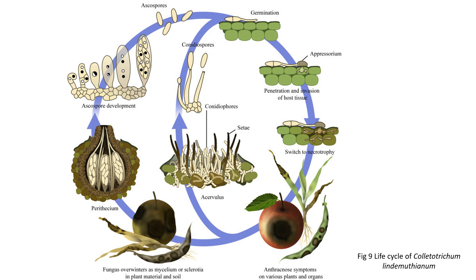The sexual form of reproduction, also known as the teleomorph stage, is depicted by a large circle. In the sexual stage, the pathogen produces perithecia and asci, which produce ascospores that escape and land on healthy plant tissue, continuing the cycle. However, the sexual phase rarely occurs under field conditions.